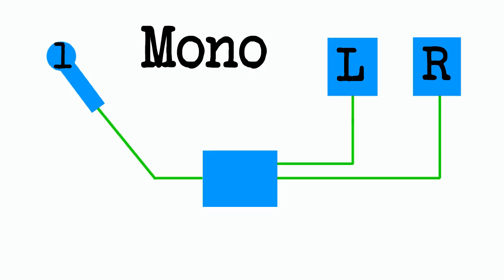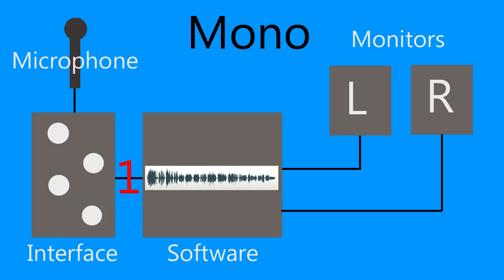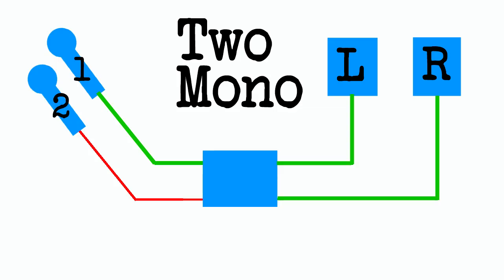A mono recording is made with one microphone and its signal is split evenly through the left and right speaker channels. A stereo recording is made with two microphones, with one dedicated to the left speaker channel and the other to the right speaker channel. An interface with one microphone or instrument input can only make a mono recording. An interface with two microphone or instrument inputs can make a stereo recording or two mono recordings from the number one or number two microphones simultaneously.